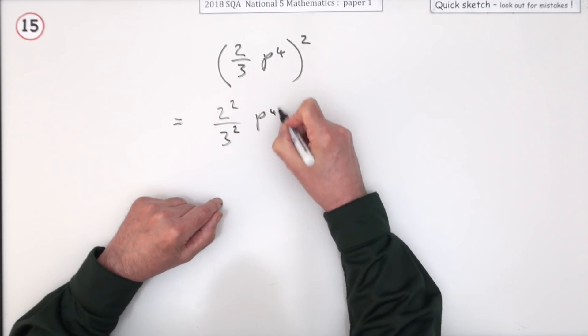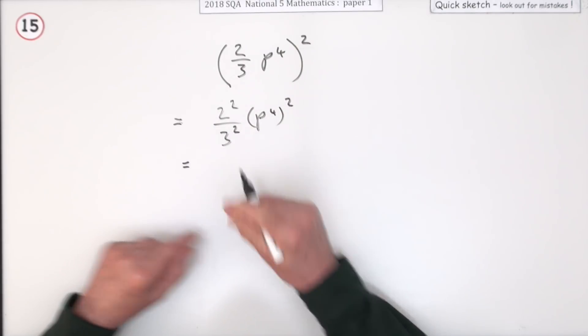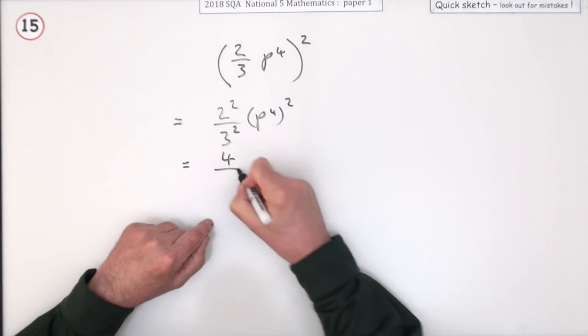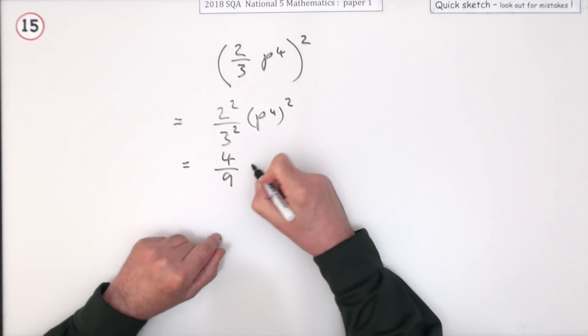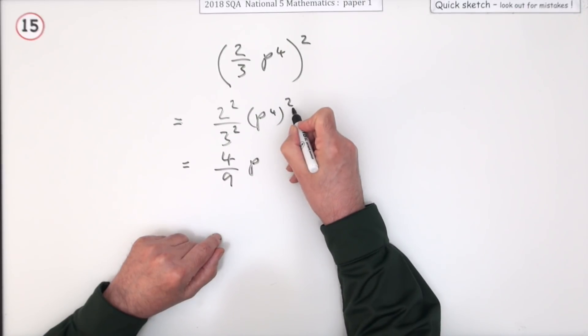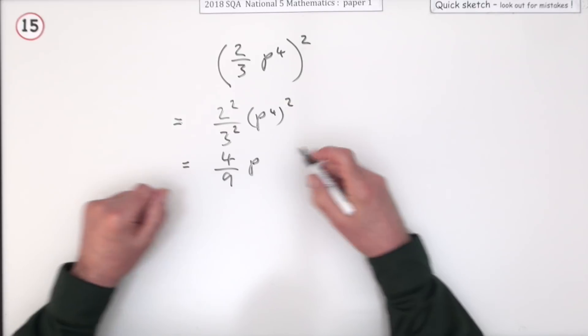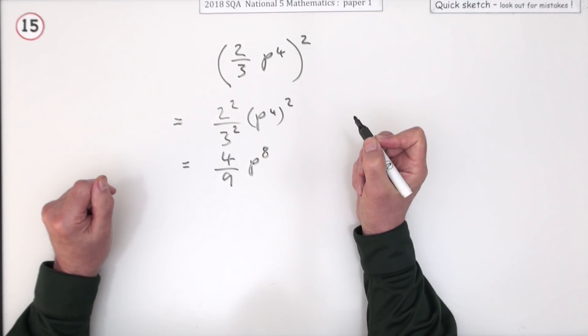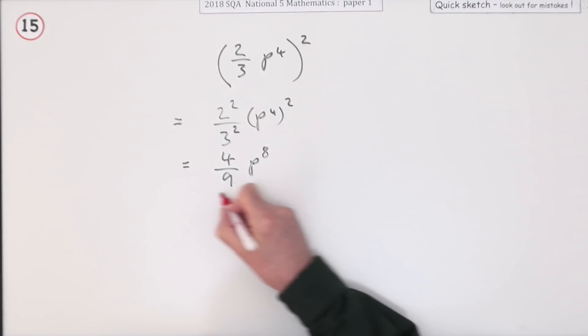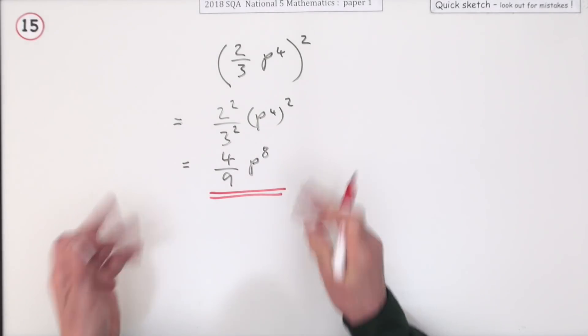Well, 2 squared is 4, 3 squared is 9, and p^4 squared isn't 6 because it's p^4 times p^4—there's going to be 8 of those p's there. And that's it, nothing simplifies any further, so there it is.